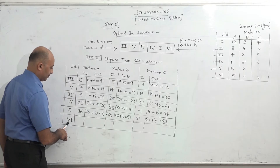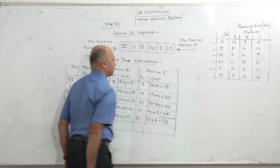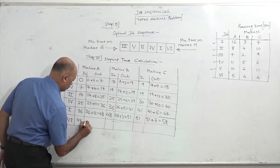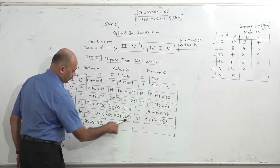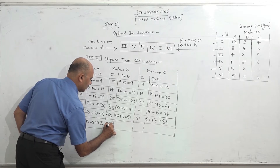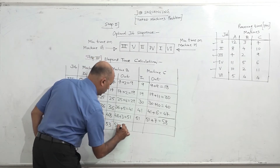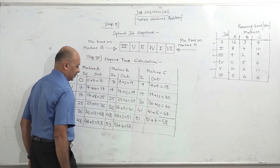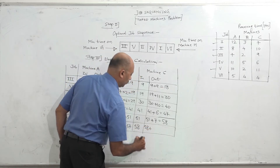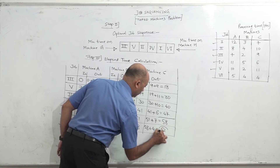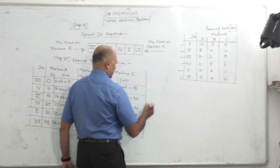Last is job 6. Machine A in-time is 48. Time on A is 5, so 48 plus 5 = 53. In-time on B is maximum of 53 and 51 = 53. Time on B is 4, so 53 plus 4 = 57. In-time on C is maximum of 57 and 58 = 58. Time on C is 4, so 58 plus 4 = 62. Total elapsed time is 62 hours.